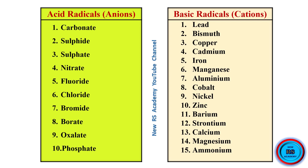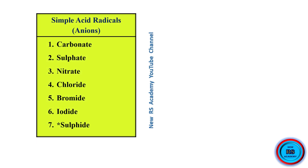What are the basic radicals? That means, what are the cations? Lead, bismuth, copper, cadmium, iron, manganese, aluminium, cobalt, nickel, zinc, barium, strontium, calcium, magnesium, ammonium. These are called basic radicals.